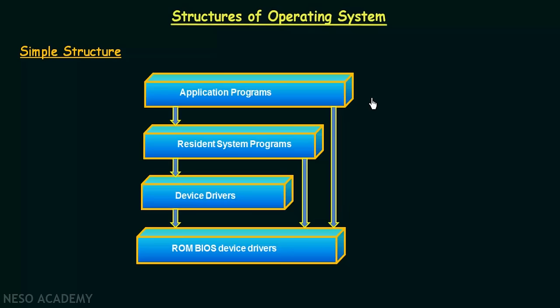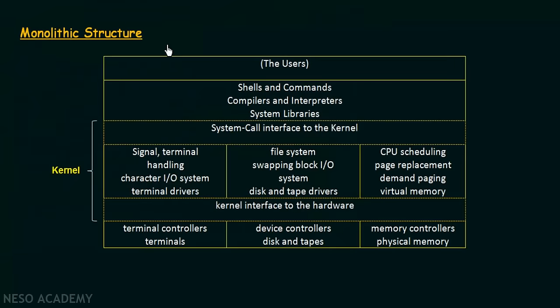Now let us see another structure known as the monolithic structure, which is also kind of a simple structure. This was followed by the earlier UNIX operating systems. In this monolithic structure, this also is a limited structure. Here we have the kernel and then the system programs. On top we have the users, and below that we have the shells, commands, compilers, interpreters, system libraries, and so on.